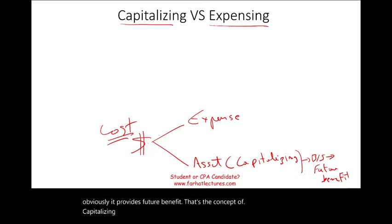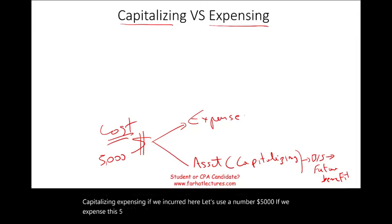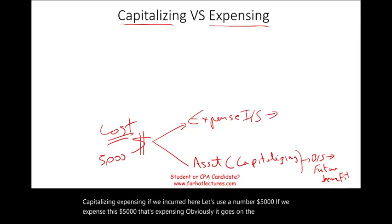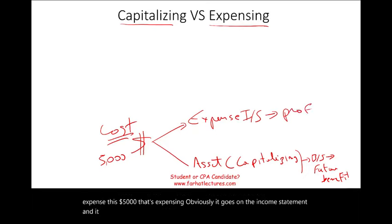Expensing — let's use a number, $5,000. If we expense this $5,000, that's expensing, obviously. It goes on the income statement, and it affects profit immediately.